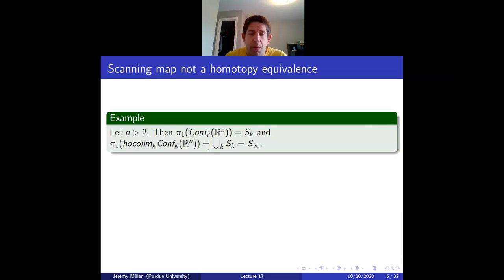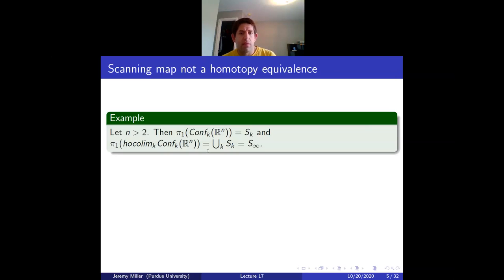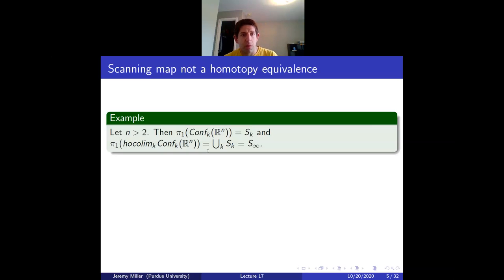We need the manifold to be not compact, or to be the interior of a manifold with non-empty boundary, in order to find the stabilization maps. Eventually we'll talk about how to remove the assumption that the manifold is compact. One thing to note is that this is really a homology statement — the scanning map is not going to be a homotopy equivalence.